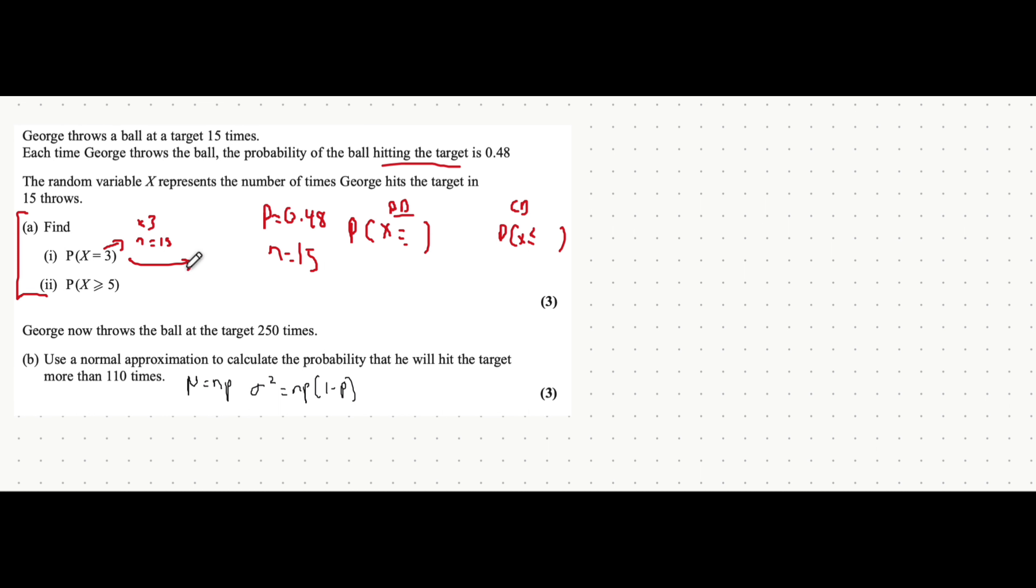So I'm just going to very quickly type that in, 3, 15, 0.48, and that's equal to 0.0196. So it goes on quite long. Let's say 0.02. That'd be fine.